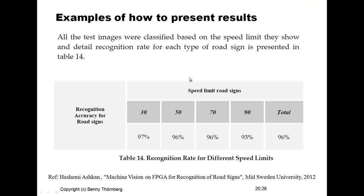Another example: a table presenting the recognition success rate for different speed signs over a large set of images and experiments, showing success rates from 93 to 97 percent for speed limits of 30, 50, 70, and 90 kilometers per hour, along with the overall success rate. There is a companion text referring to table number 14 with a short, self-explanatory caption: 'recognition rate for different speed limits.' This is enough for the reader to quickly understand what the table is showing.